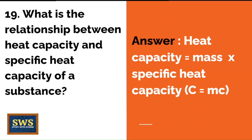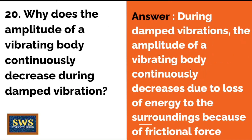What is the relationship between heat capacity and specific heat capacity of a substance? Heat capacity equals mass multiplied by specific heat capacity — C = mc.